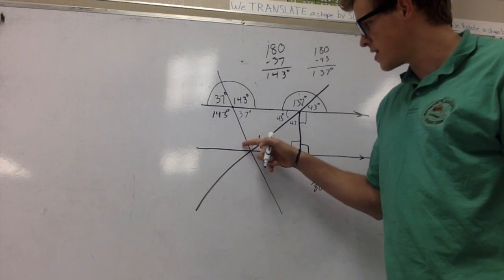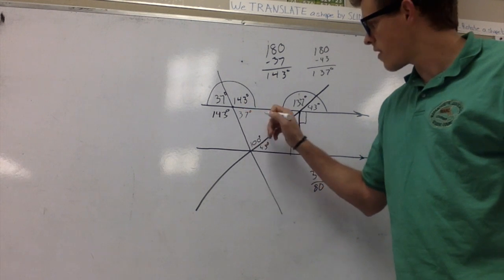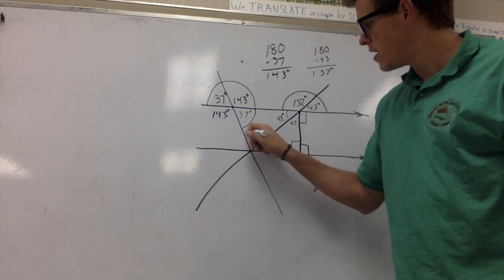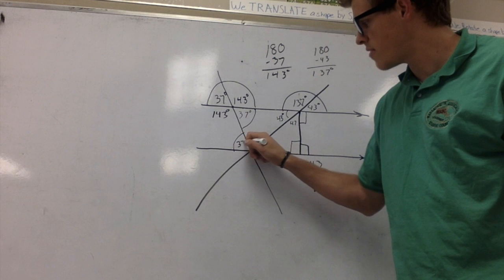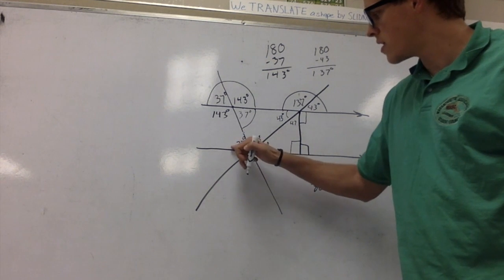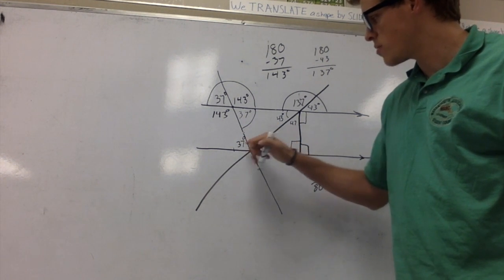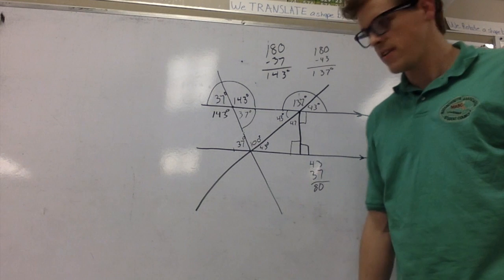We can take a look at this piece right here. Given alternate interior angles between here and here, this is going to be 37 degrees. Or given that these three are supplementary, 43 plus 100 plus 37 give us 180 degrees.